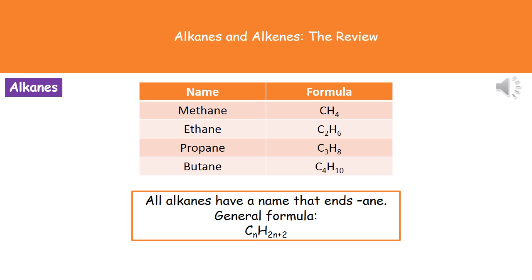The general formula for an alkane is CₙH₂ₙ₊₂. So if you replace N with any number — for example 4 — then it's C₄H, and 2 times 4 plus 2 equals 10, giving C₄H₁₀, which is butane, as you can see in our table. Make sure you learn that general formula and substitute in whatever number of carbon atoms you're given.